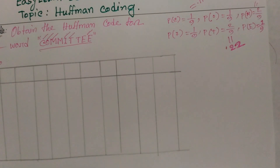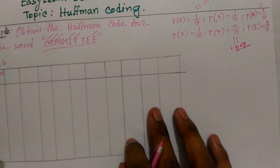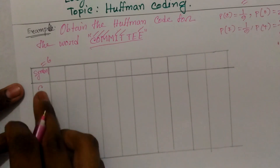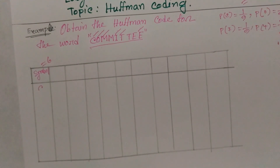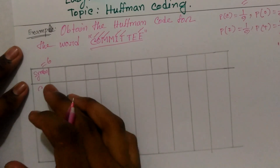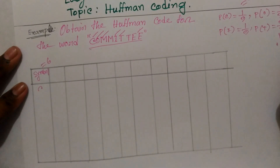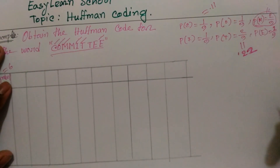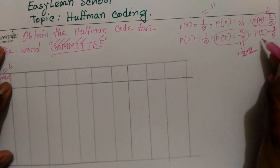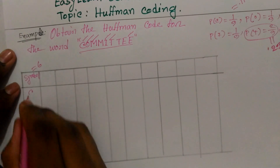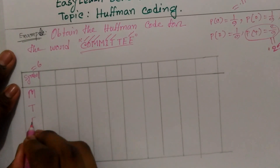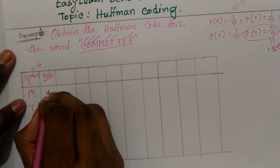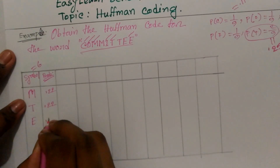The probability is 0.22. If we arrange probabilities in descending order, we get descending order values. The probabilities are: first one is M, then T, then E. This probability is 0.22, then 0.22, then 0.22.